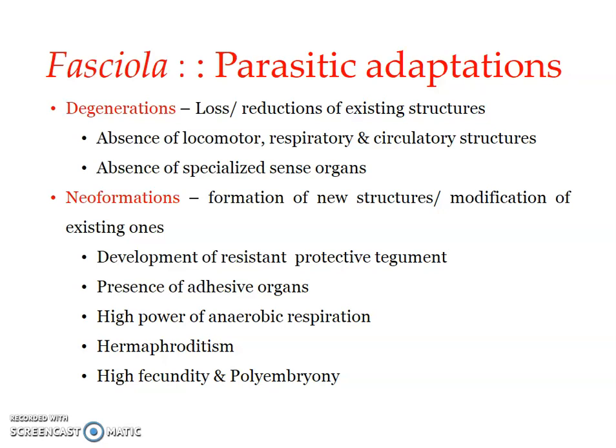The next neo-formation is hermaphroditism. Because Fasciola lacks locomotory structures and cannot move about to find the opposite sex during reproduction, it has developed hermaphroditism. Even though Fasciola is a hermaphrodite, cross-fertilization is very common, and self-fertilization is rare — occurring only when cross-fertilization is not at all possible. Still, hermaphroditism is a key parasitic adaptation.